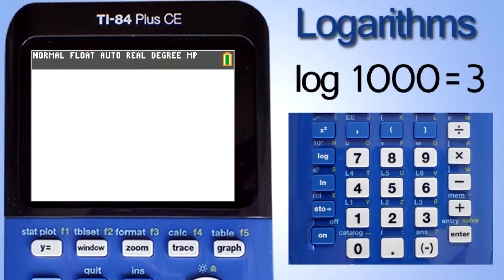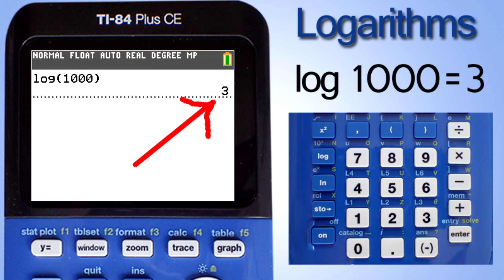Solving base 10 logarithms on the TI-84 Plus CE graphing calculator is fairly easy. On the calculator press this log button here. This log open parenthesis appears. Enter 1000 and close the parenthesis here. Now press the enter key. And there is the answer to the right, 3.